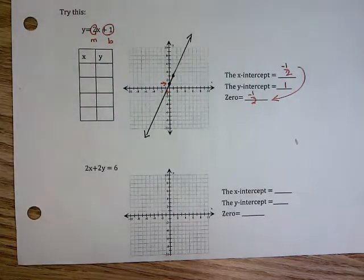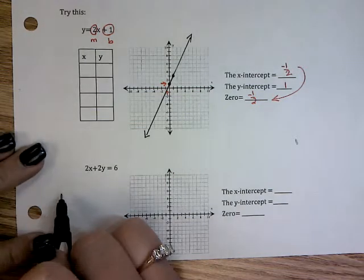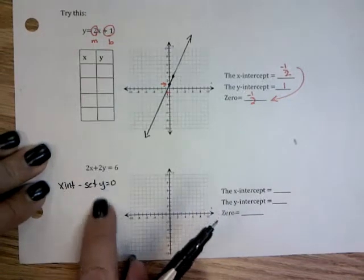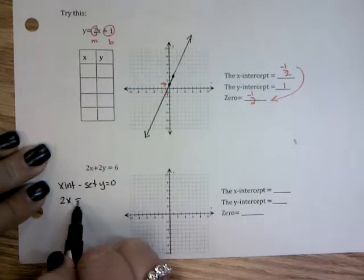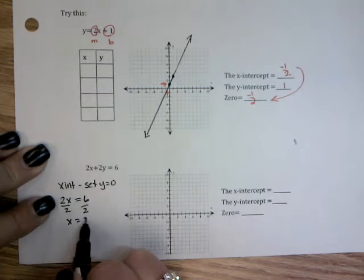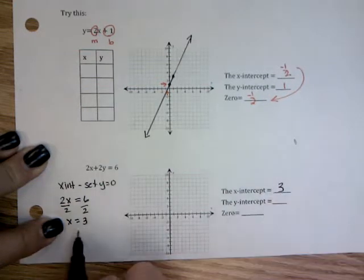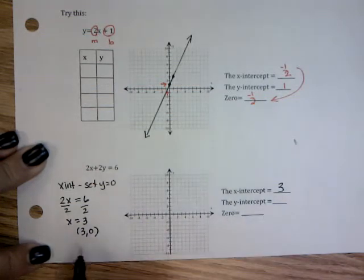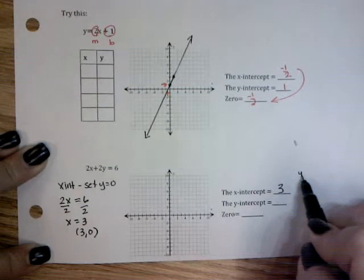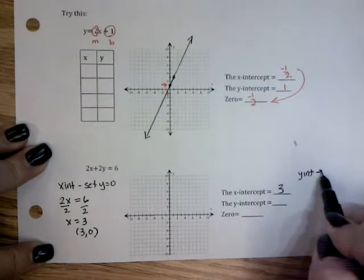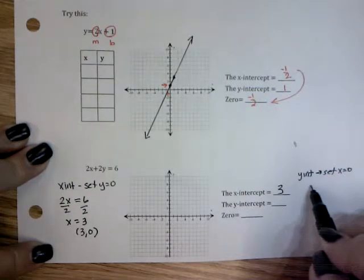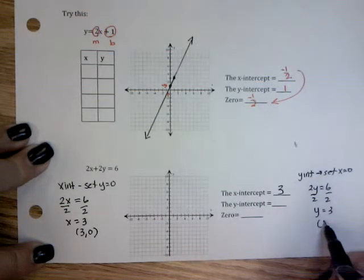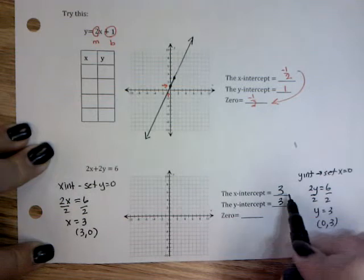Now I'm going to graph this one using x and y intercept because it's already set up nicely to do so. When I use x-intercept, I'm going to set y equal to 0. So therefore if y is 0, I get 2 times x equals 6, x equals 3. My x-intercept is 3 or (3, 0). My y-intercept, I'm going to set x equal to 0.